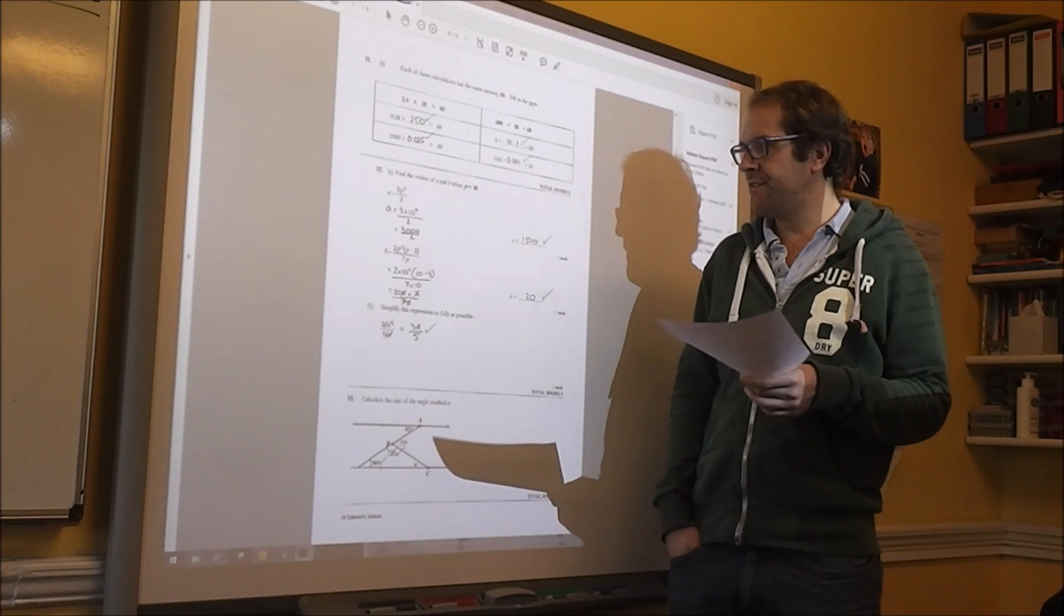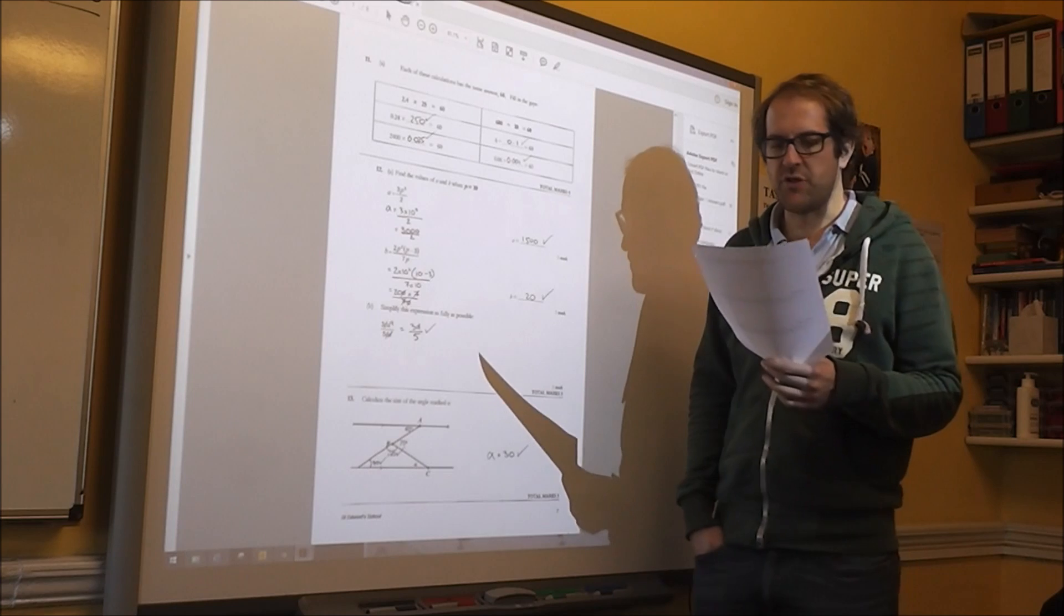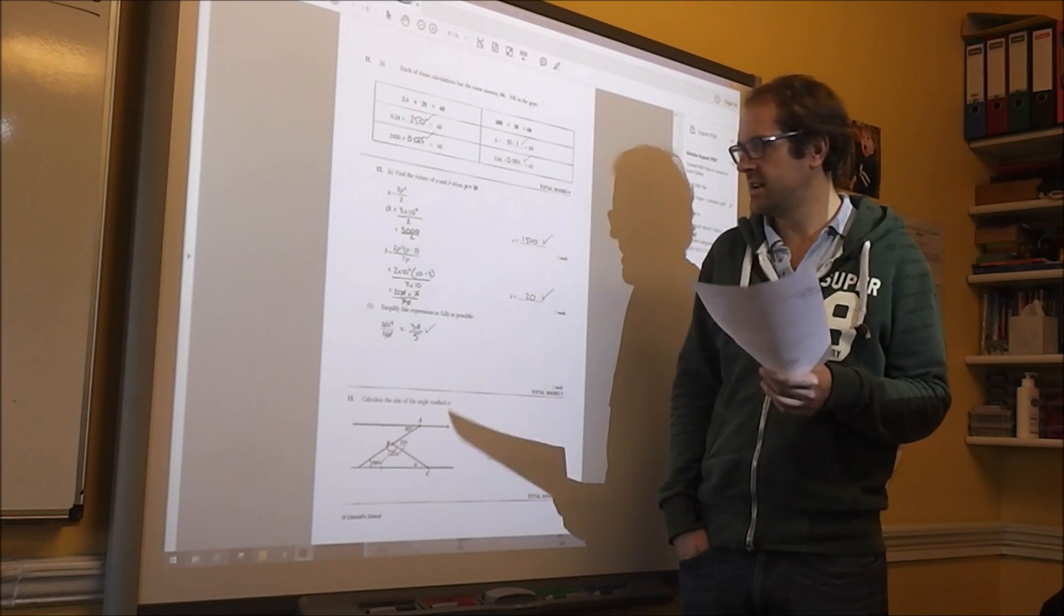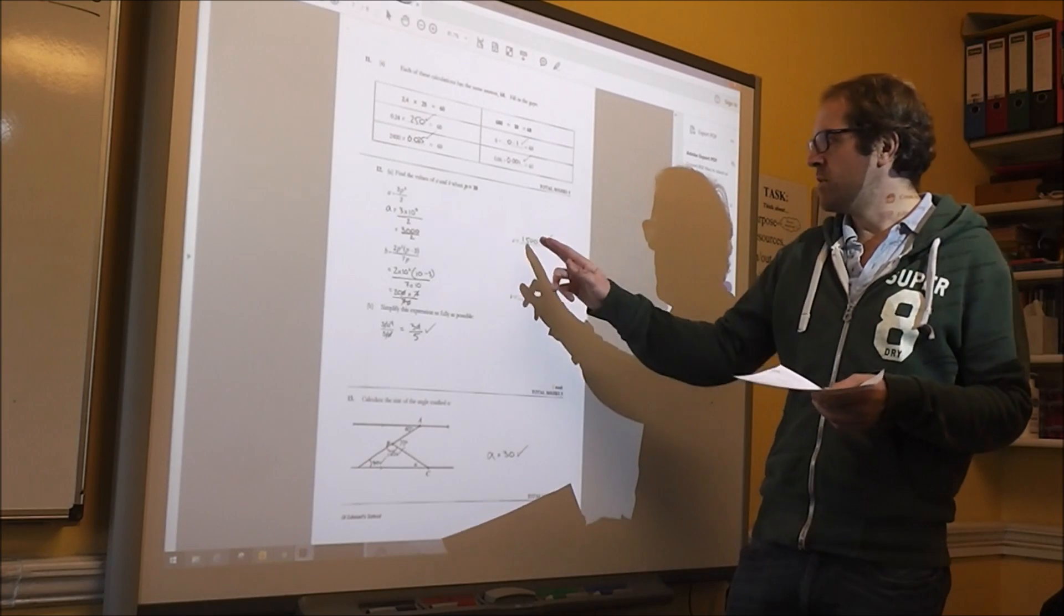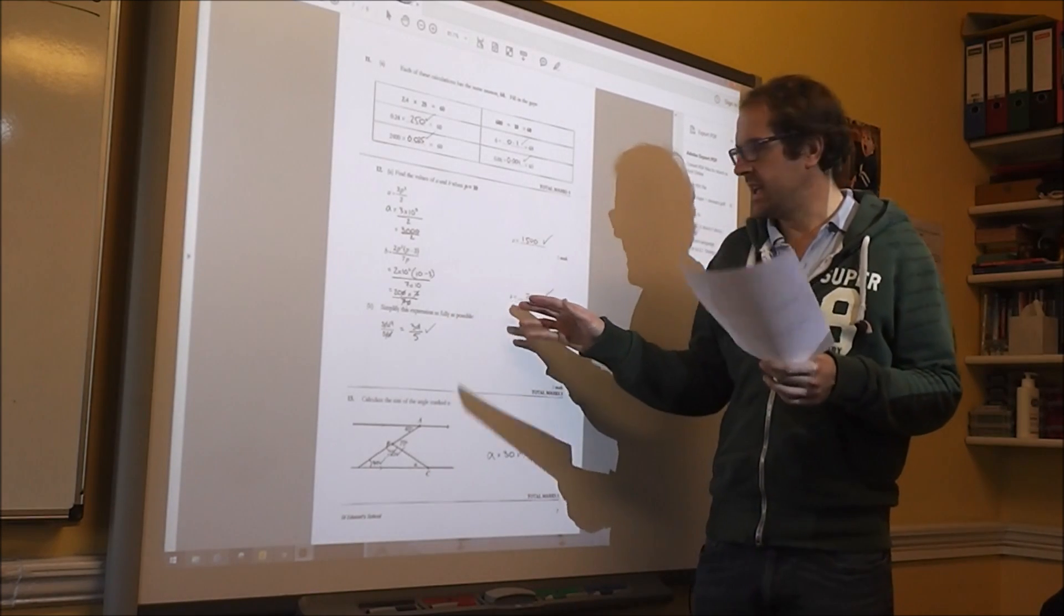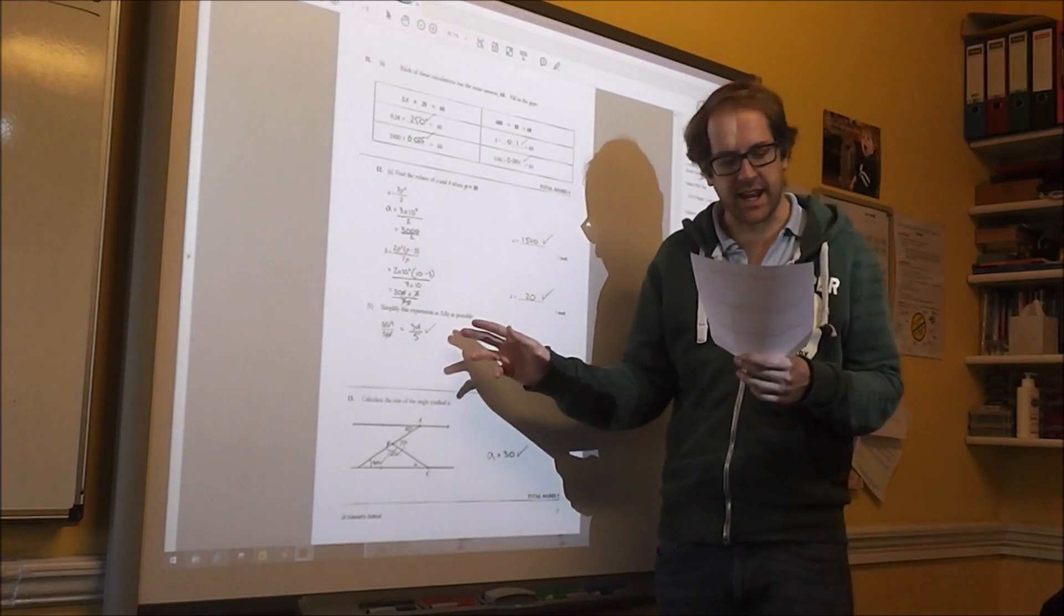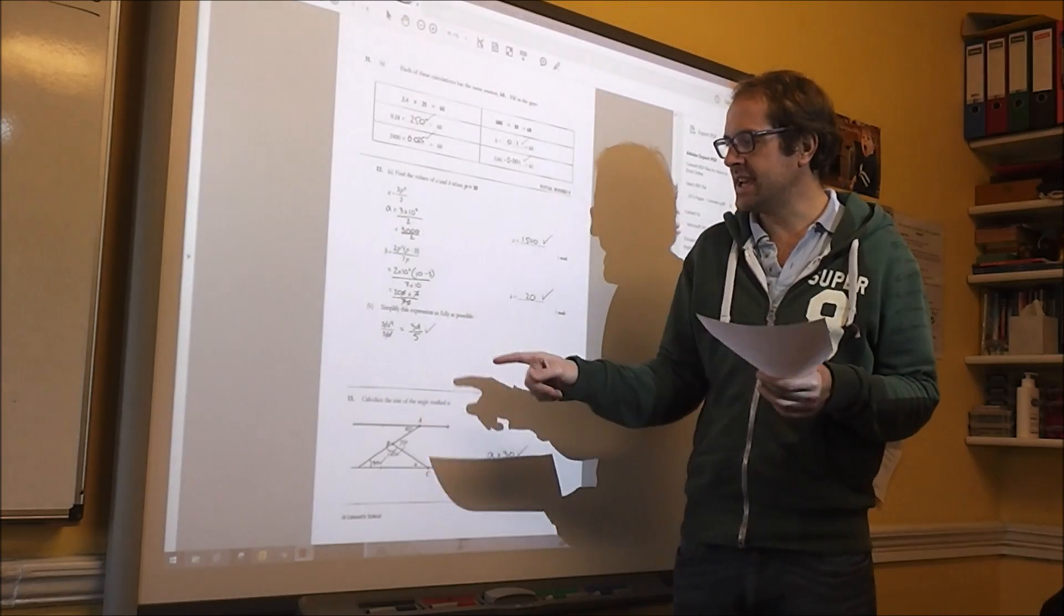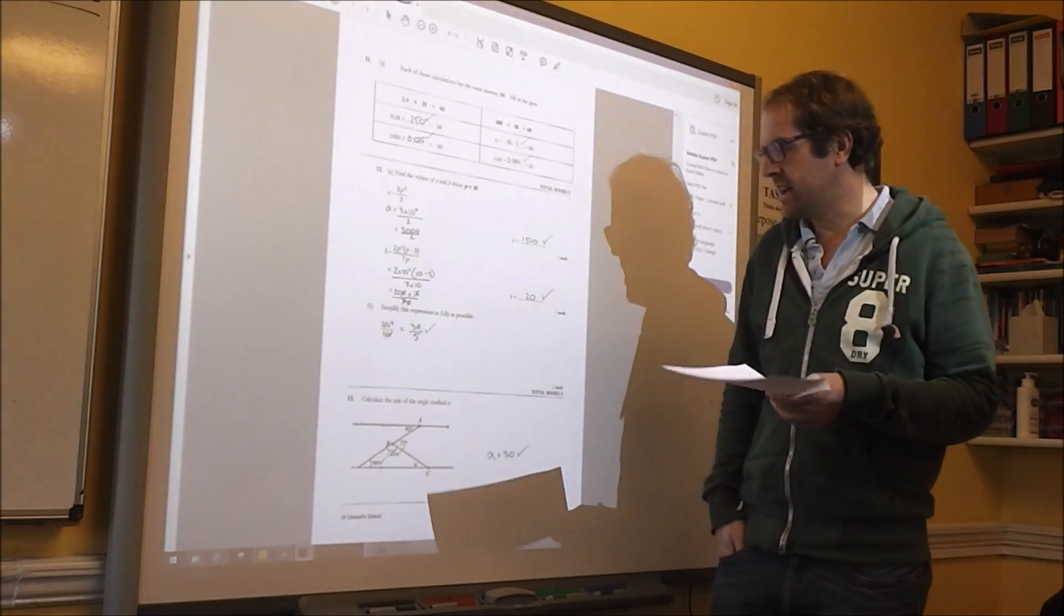Number 12 is a bit of substitution. So remember your rules of BIDMAS, do the indices before you multiply or divide, and then it gets fairly easy. 1,500, and then B is 20. Simplify that expression. You need to cancel the C's, and you can cancel the D, so you're left with 3 D over 5.